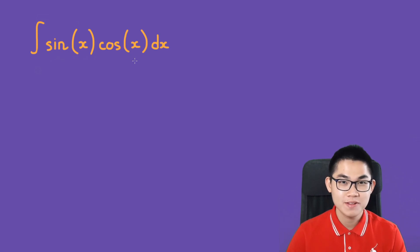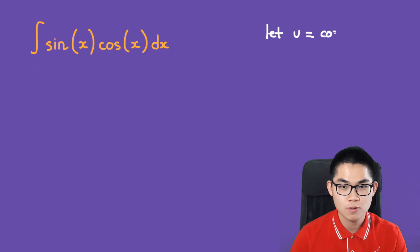Are you ready? Well, the first thing I'm going to do is let u equal cosine of x. Then we differentiate it. So du/dx is equal to negative sine of x.